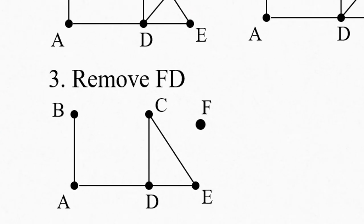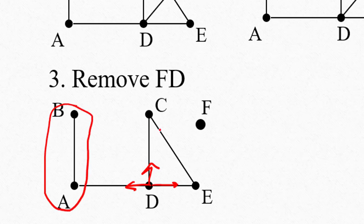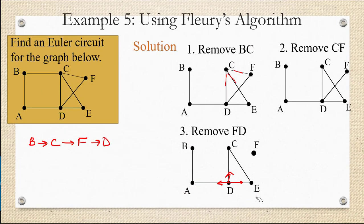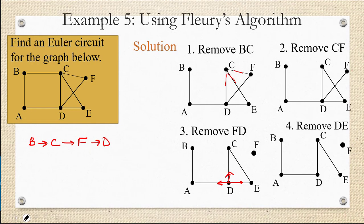Now that we're at D, we have several options. We can go to E, we can go to C, or we can go to A. Notice that if we go to A, we're removing a cut edge. We would be creating two completely distinct graphs. So instead, I chose to remove D to E.